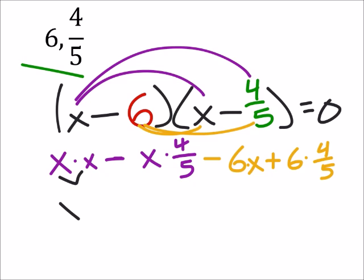So x times x is x squared. I do have a negative 4/5 x minus 6x. So what I'm going to do is that'd be 6 over 1. I'm combining two values but one of them is a fraction, so I need both to be fractions with the same denominators. I'm going to make this 30/5 because that's what 6 is, 30 divided by 5.